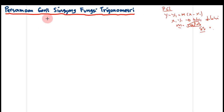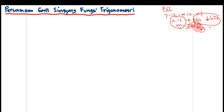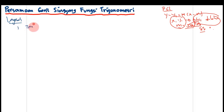Untuk menentukan persamaan garis singgung, kita memerlukan kedua hal ini. Yang pertama, kita harus tentukan dulu di titik mana dia bersinggungan — di titik mana yang dilaluinya. Dan yang kedua, berapa gradiennya. Langkah pertamanya adalah kita tentukan dulu titik singgungnya.